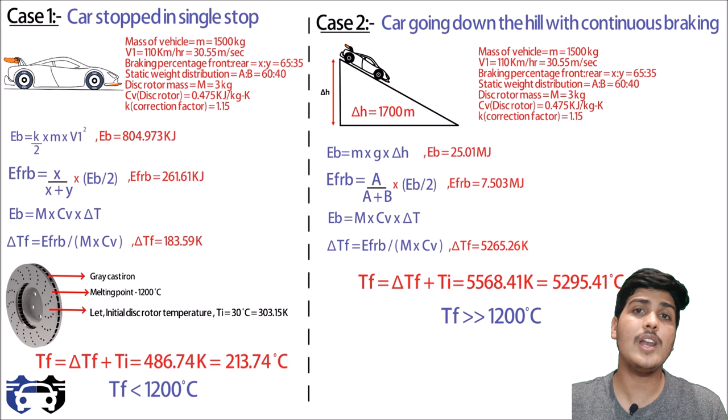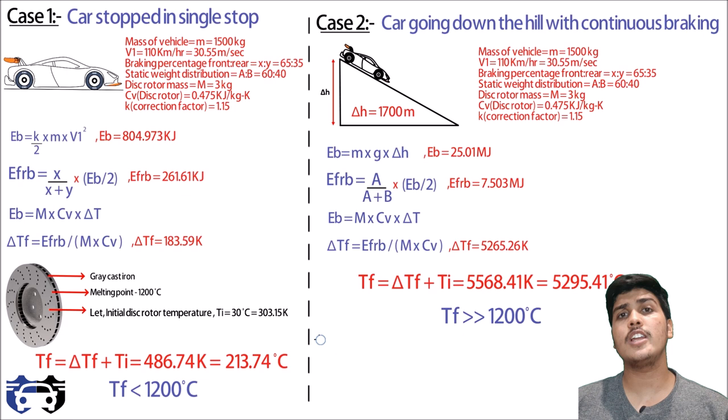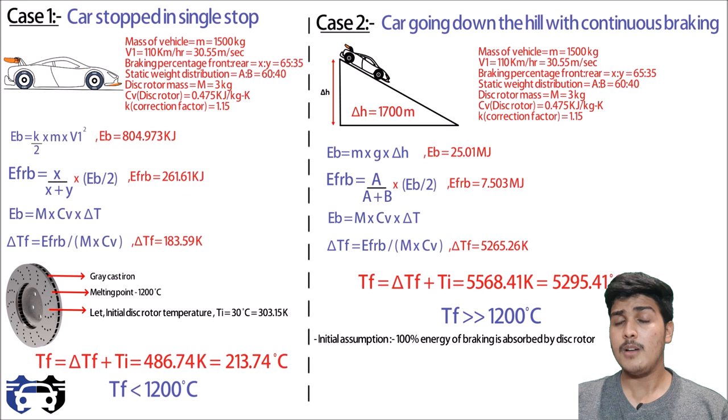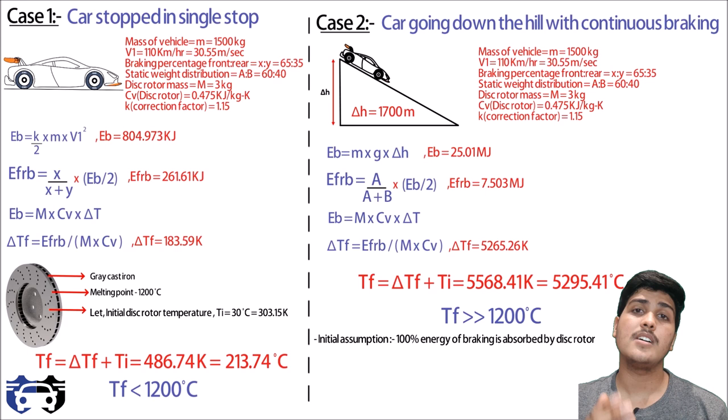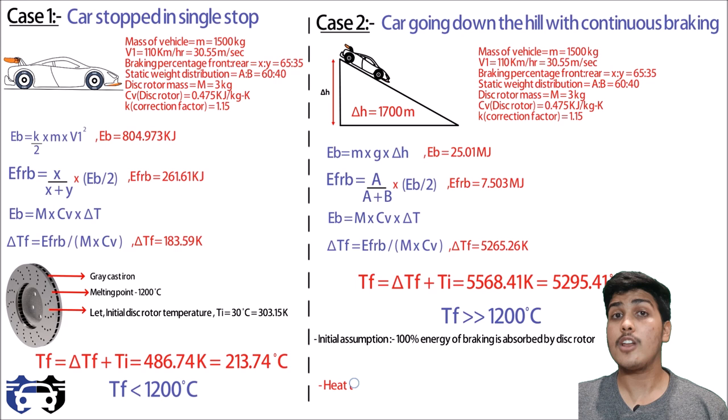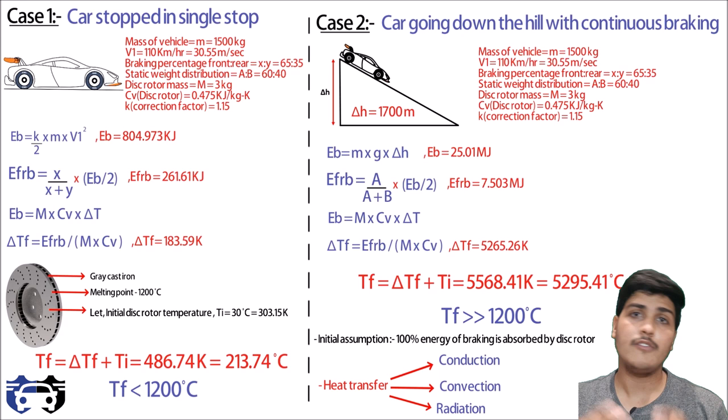This problematic result arises because the analysis assumed 100% of braking energy is absorbed by the disc rotor. In reality, energy is distributed among the disc rotor, brake pads, piston, caliper, and other components. Therefore, while braking we must consider all three modes of heat transfer — conduction, convection, and radiation — for a proper thermal analysis. Upcoming videos will go deeper into thermal analysis considering all these modes of heat transfer.